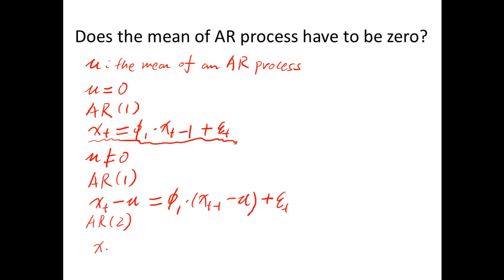On the left side, we still have Xt minus mu equals phi 1 times Xt minus 1 minus mu, parenthesis. And then phi 2. Let me move my pen around so I can write the second component. Parenthesis, Xt minus 2 minus mu parenthesis, and then epsilon t.